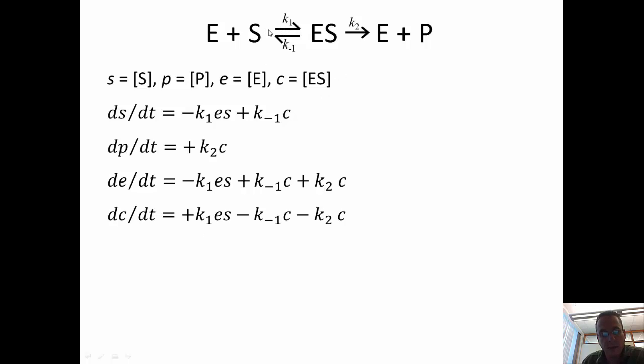It appears with the positive rate plus K1 times e times s, and it disappears via this process and this process. So, K minus 1 times c, and K2 times c.